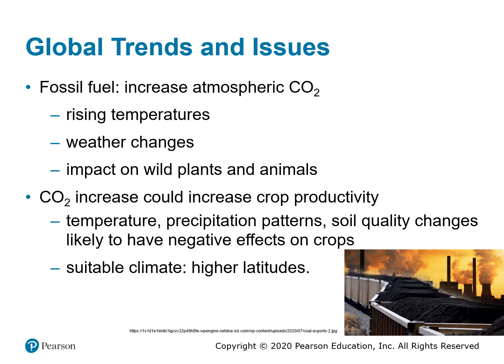Using fossil fuels increases atmospheric carbon dioxide, contributing to rising temperatures and weather changes, and has a negative effect on wild animals and plants. On the other hand, increased carbon dioxide levels would increase crop productivity, provided rainfall patterns remain stable. However, that is highly unlikely, and temperature, precipitation patterns, and soil quality changes are likely to have negative effects on crops. Suitable climates for growing crops would move to higher latitudes — further south in Australia or further north in Northern Hemisphere countries.